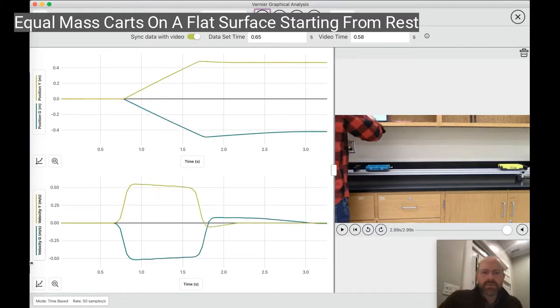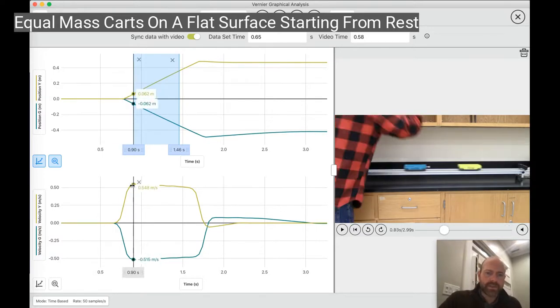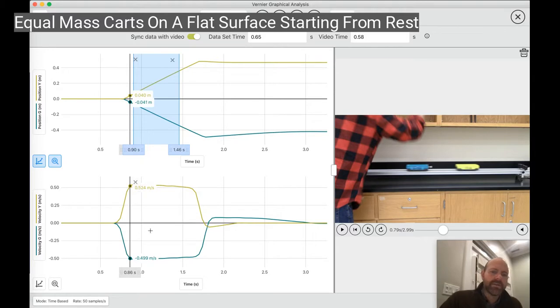And when they explode, we get in the position two lines with opposite slopes, but pretty much the same magnitude of slope. And we can check that by looking at the velocity after the explosion. We have about 0.5 meters per second for the yellow cart and negative 0.5 for the green cart. So equal masses, they explode. The total momentum should be 0, and it is because they have equal and opposite momentum.